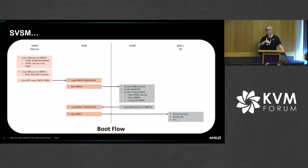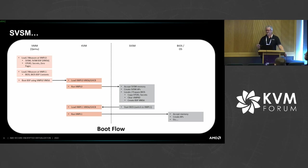The initial boot will load the VMPL 0 VMSA and then KVM will issue the VM run. At that point the SVSM will go through its startup and initialization, accept all the memory available to it, create all the APs defined for the guest, and then locate and prepare the BIOS — right now we're doing that through QEMU firmware config. It'll copy everything over as the specification describes, then create the VMSA for the BIOS and set that to VMPL 1. Then we'll ask for VMPL 1 to be run by the hypervisor, and the hypervisor will kick that off — now your BIOS and OS start up as you would normally see, just at VMPL 1.